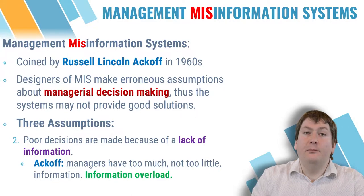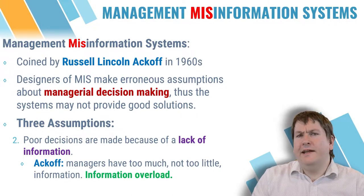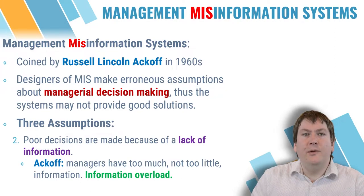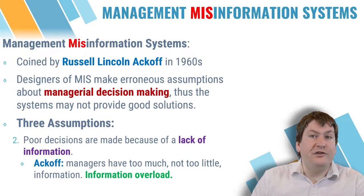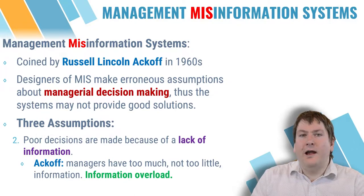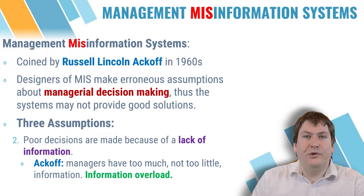The next assumption is that poor decisions are made because we lack information. While having too little information can definitely be a big problem, having too much can be just as damaging — we call this information overload. Recall from our earlier lecture that a quality of good information is relevance to the subject or decision at hand. If our MIS produces tons of information that isn't relevant to the decision we're trying to make, it could actually hurt our decision-making process by distracting us from more important data.